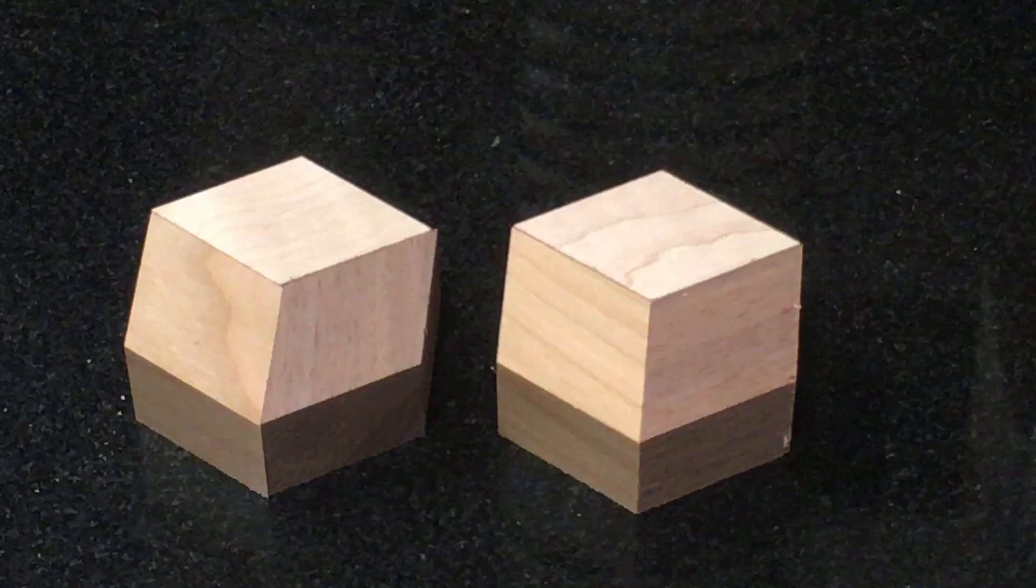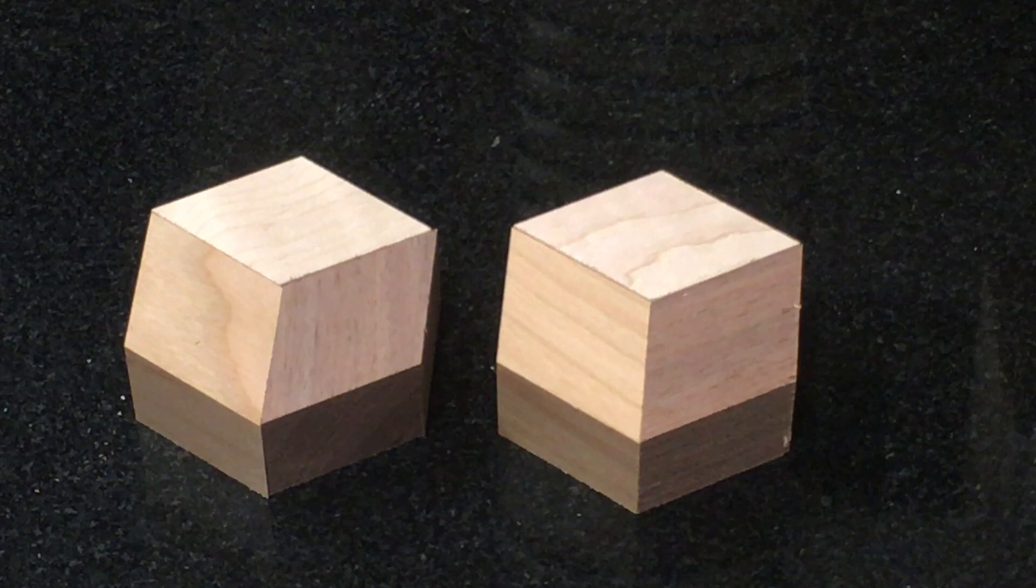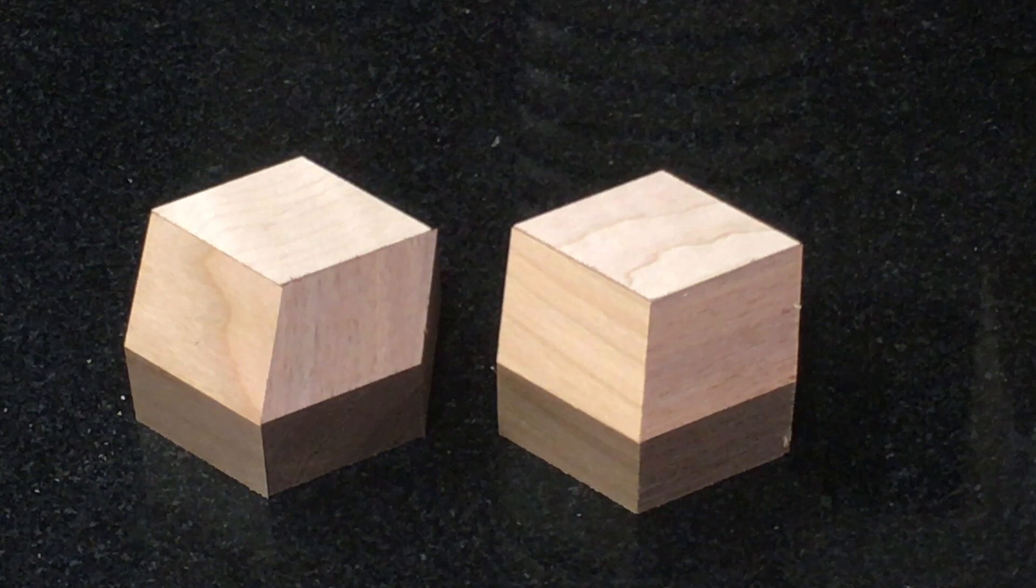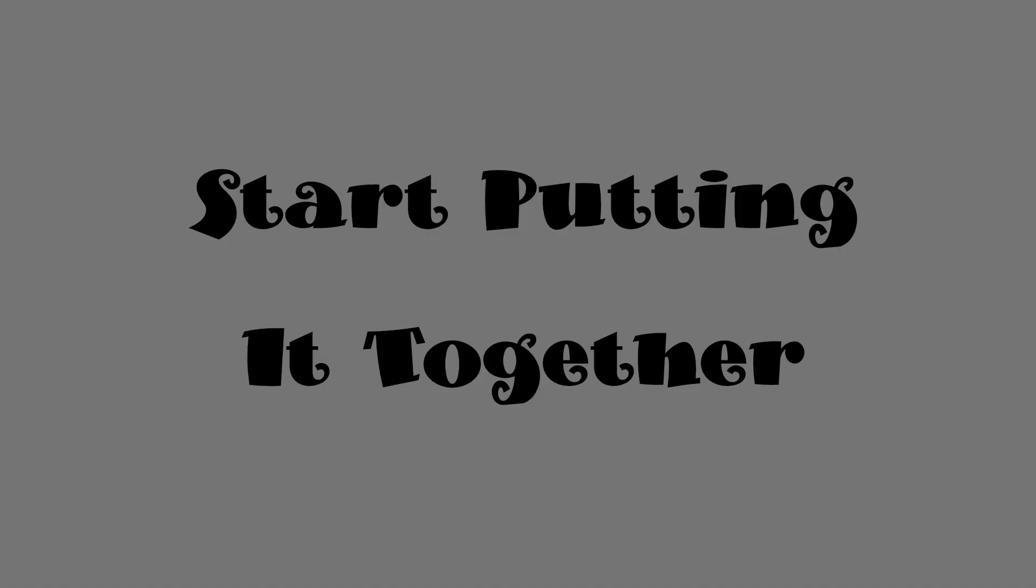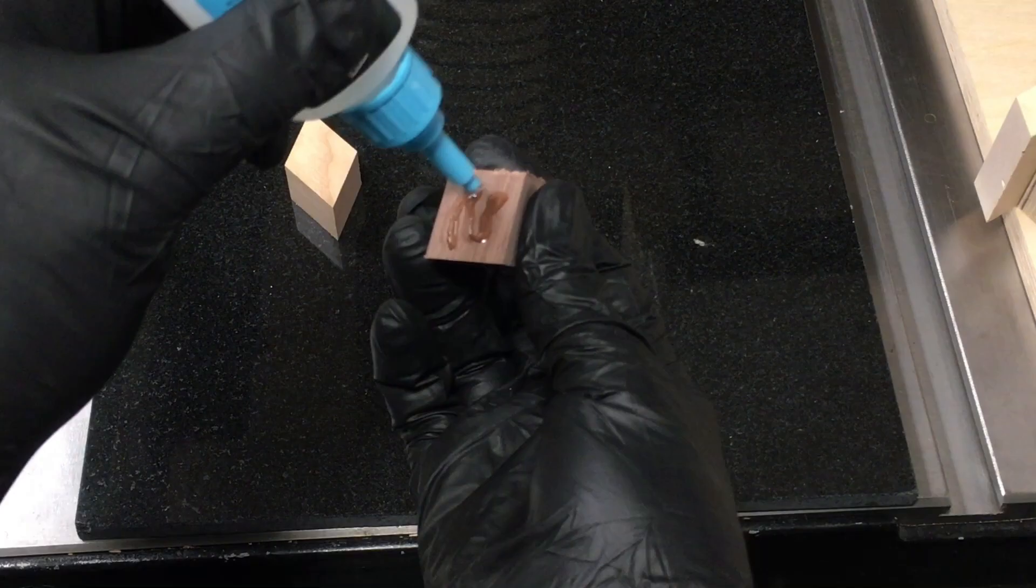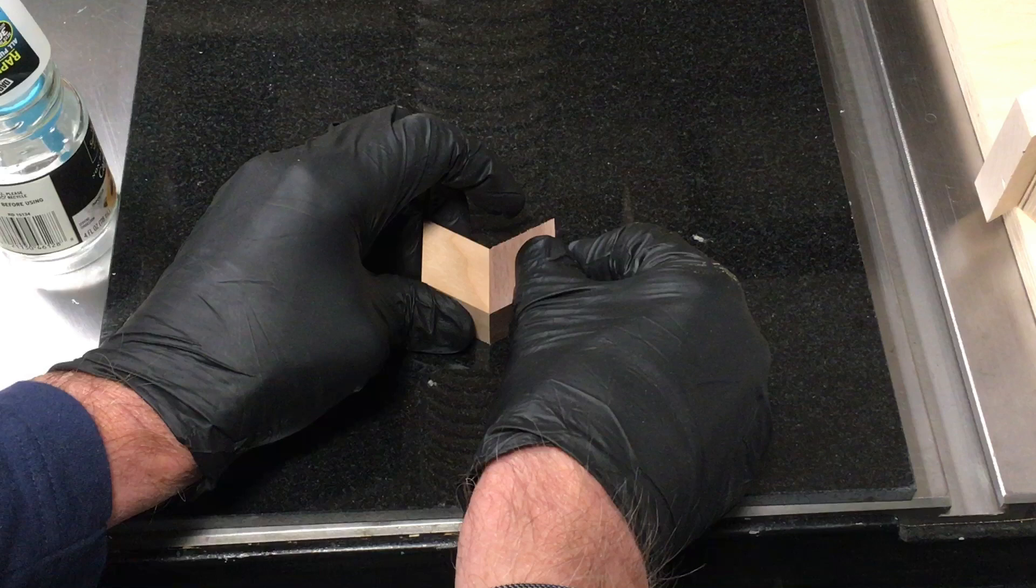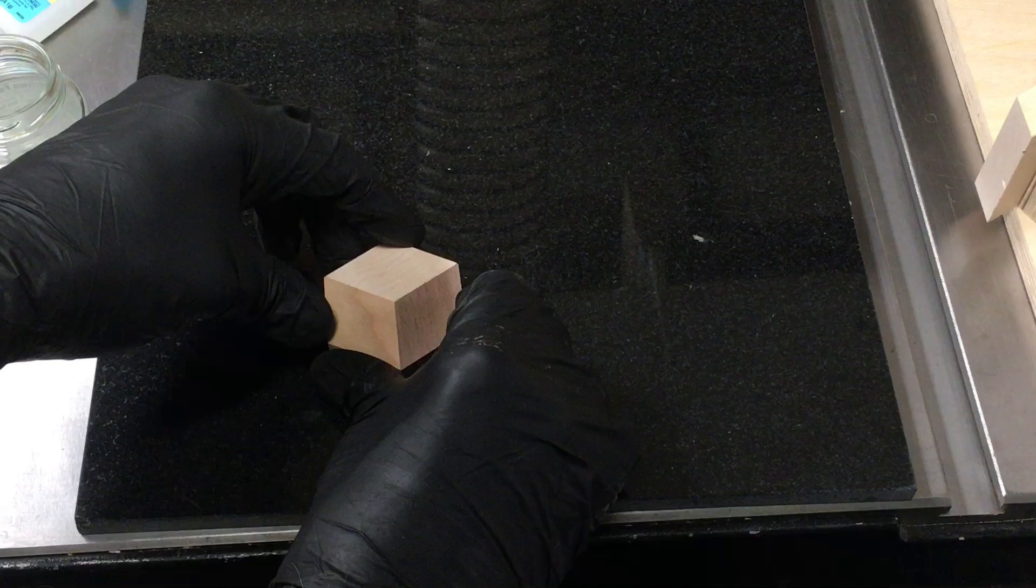Pay attention to grain direction. It's not important which grain directions you choose, but it's important to be consistent. If most of your walnut pieces are running vertically, a horizontal one is just going to look wrong. I put the pieces together one at a time because that way if a problem arises, I can usually correct it before it propagates. And a problem usually does arise for one reason or another.